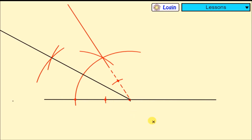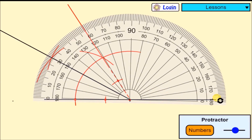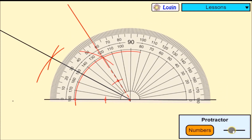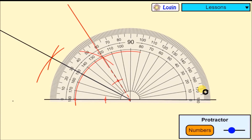And that is how we construct 30 degrees. Just to show you that it's exactly 30 degrees, we shall get a protractor and put it right there. You can see that it's 30 degrees. After drawing the 30 degrees, you make sure you label it.